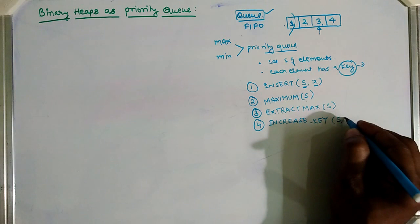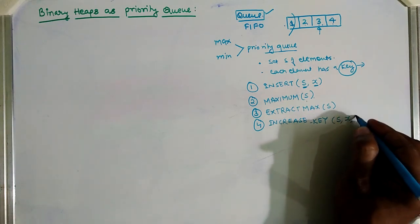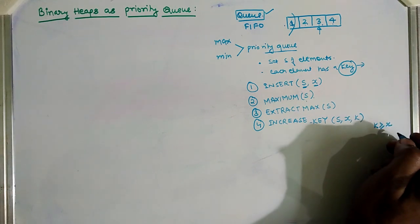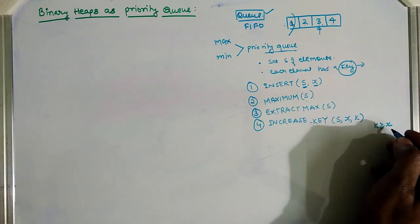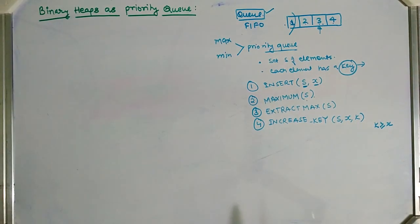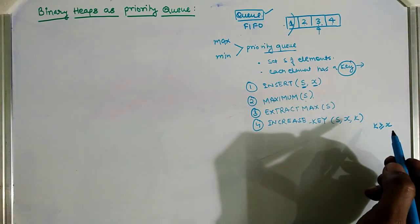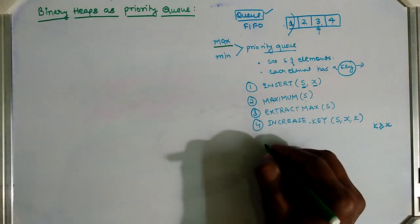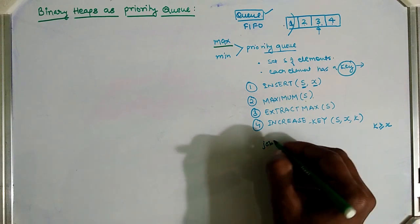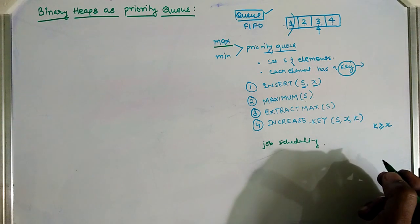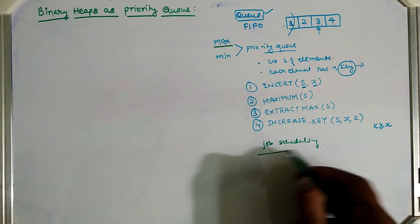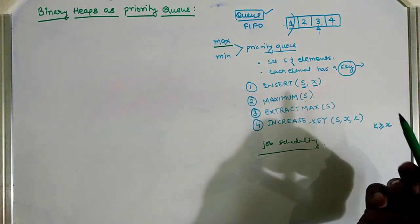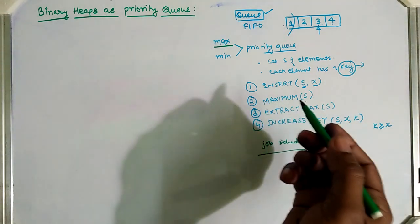The fourth operation is Increase Key — it increases the key value at index x to value k, with the assumption that k is always greater than or equal to the current value at x. The most important application of max priority queue is job scheduling or process scheduling in computers, where shared computers use this type of priority queue.